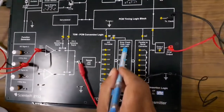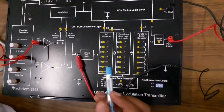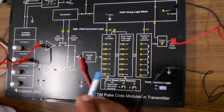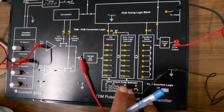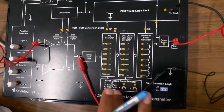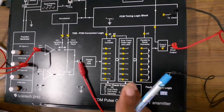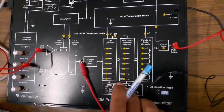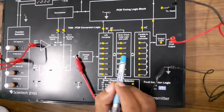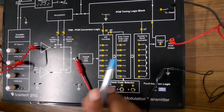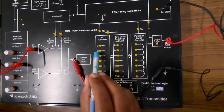Here the error check codes are available. If we want to remove the error in the channel, we can use parity bits — even parity, odd parity, or Hamming code. Here we see these are in the off position, meaning we are not assuming any channel error — we are assuming the channel is noiseless. The encoded signal is produced here.